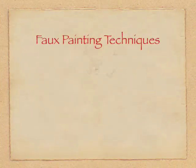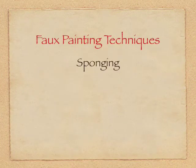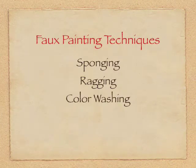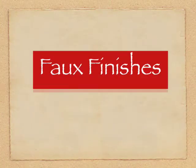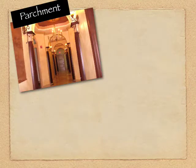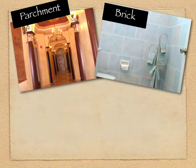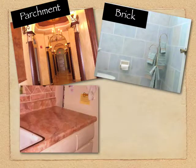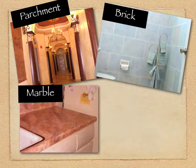With various faux painting techniques like sponging, ragging, color washing, and stippling, you can achieve beautiful faux finishes like parchment, brick, marble, and even wood.